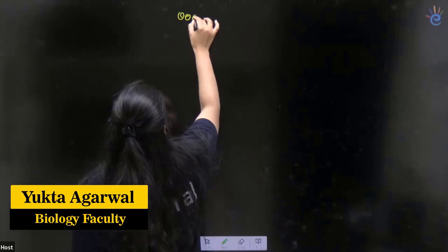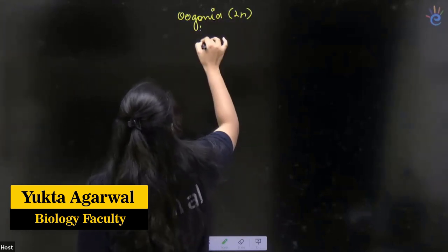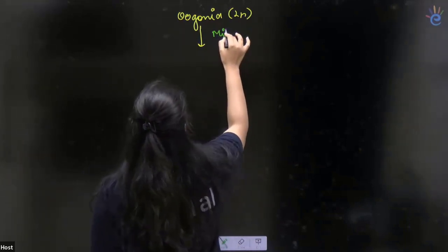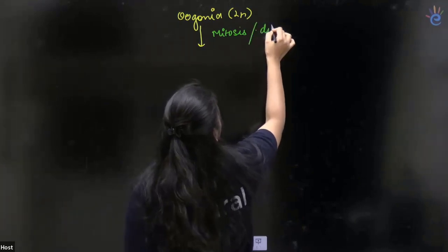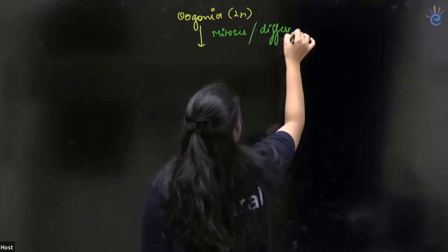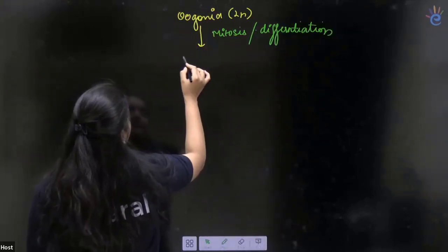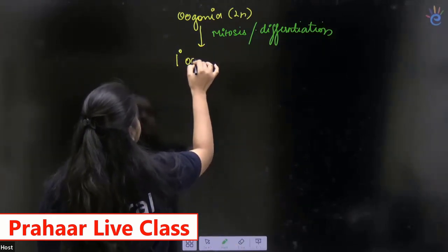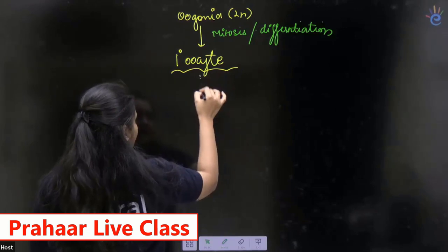Oogonia undergo mitosis and differentiation. NCERT - so what about the primary oocyte? Now, the primary oocyte...